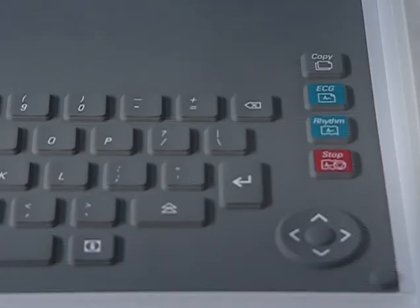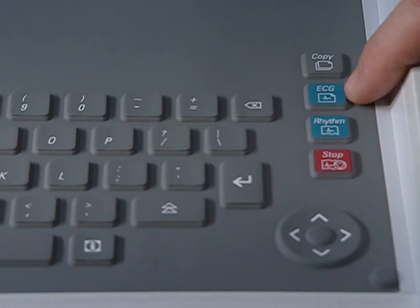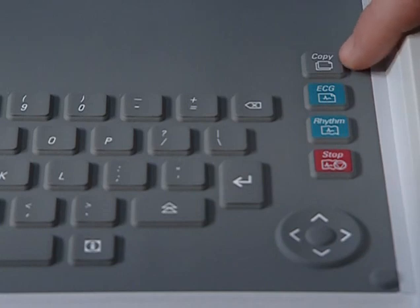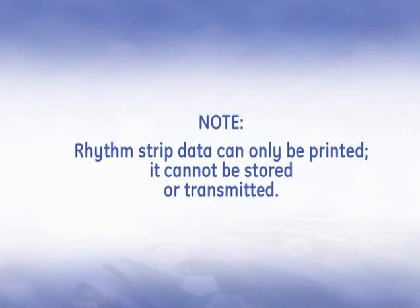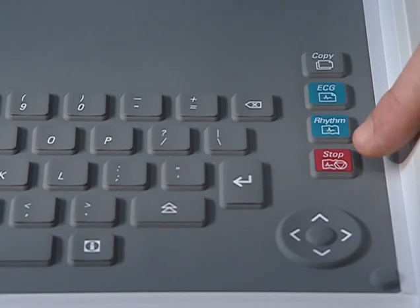Press the ECG key to begin acquiring a 12SL resting ECG, including measurements and interpretation. Press the copy key to print a duplicate copy of the ECG report you just printed. Press the rhythm key to print continuous ECG data. Keep in mind, however, the rhythm strip only prints — it cannot be stored or transmitted. We'll revisit the ECG and rhythm keys in the section on acquiring an ECG. The stop key stops the writer from printing.